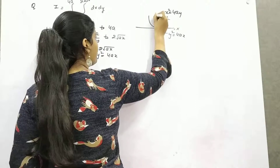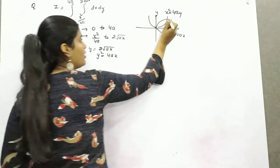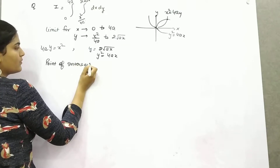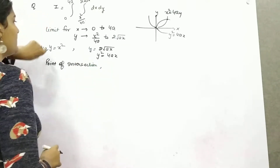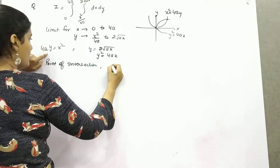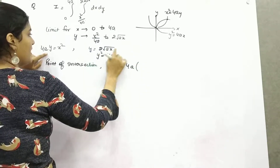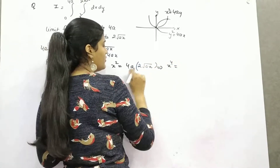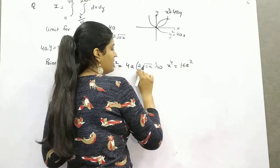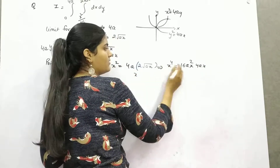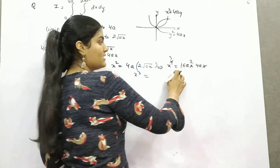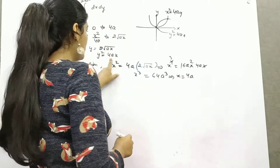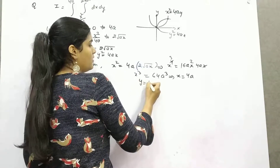Now find the point of intersection. Solving the two equations: x² = 4ay and y² = 4ax. Substituting y = 2√(ax) and squaring both sides gives x⁴ = 16a²·4ax = 64a³x, so x³ = 64a³, meaning x = 4a. Substituting back, y = 4a. The point of intersection is (4a, 4a).